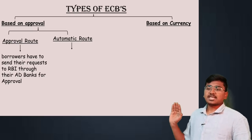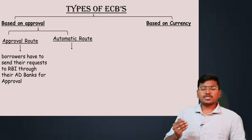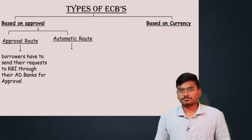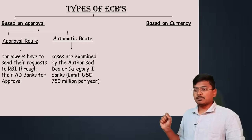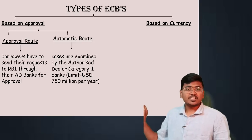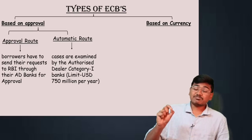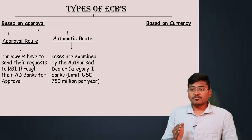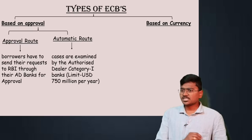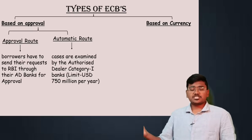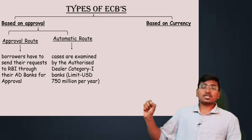Under the approval route, borrowers have to send their request to RBI through their Authorized Dealer Category 1 banks for approval. Under the automatic route, cases are examined by the Authorized Dealer Category 1 bank, and the limit will be USD 750 million per year. If the amount exceeds USD 750 million per year, the borrower has to obtain ECBs through the approval route.